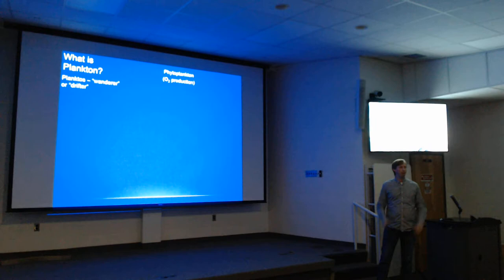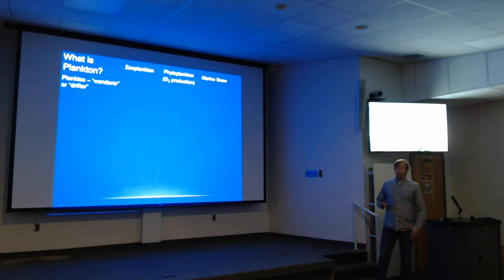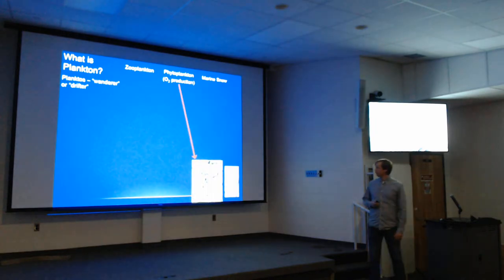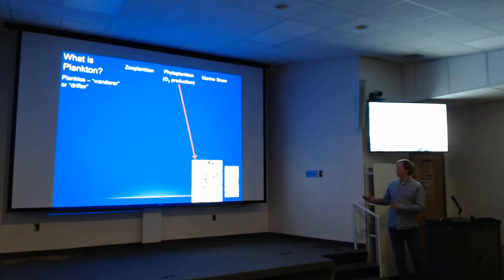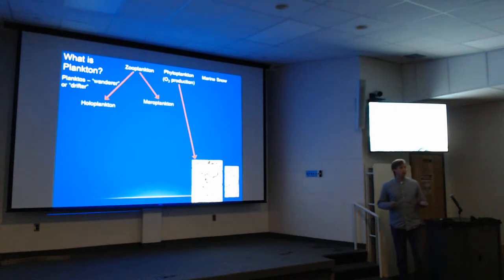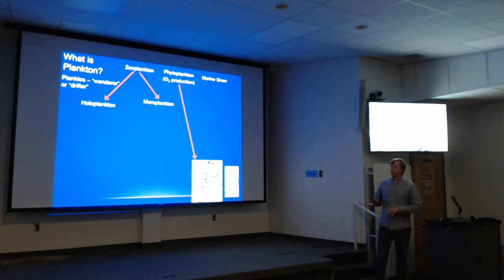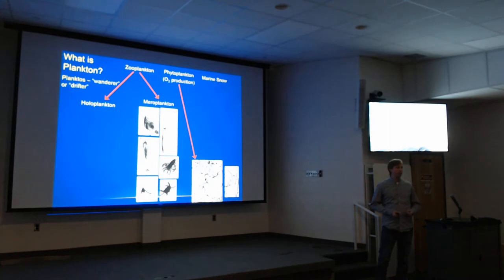We'll be talking a lot about plankton today. Plankton 101 — what is plankton? It comes from this Greek word 'planktos,' meaning wanderer or drifter, which gives you an idea of how these organisms live. By definition, they can't swim against the prevailing oceanographic currents. Three main groups are phytoplankton, which are responsible for about half of the oxygen production in our atmosphere; the zooplankton, or the animal component; and marine snow.